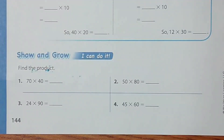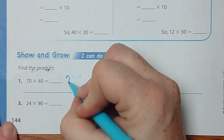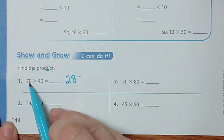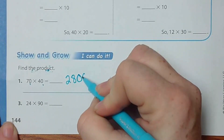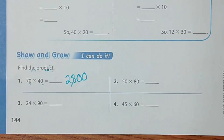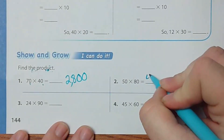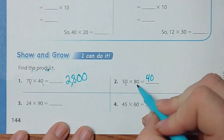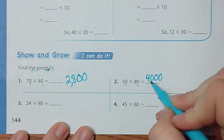Number 1 says 70 times 4. What is 7 times 4? It's 28. And how many zeros do we have? One zero, so the answer is 2800. Number 2: what is 5 times 8? Five times 8 is 40, and how many zeros do we add? Two zeros, so it's 4000. Good job.